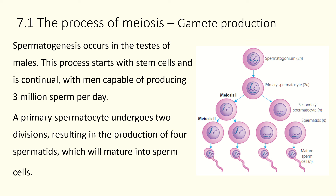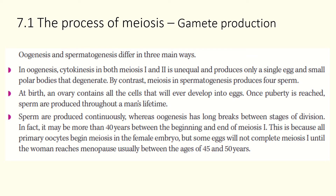The primary spermatocyte undergoes two divisions — meiosis one and meiosis two — and the result is four spermatids, which all mature into sperm cells in the epididymis. So oogenesis takes one diploid oogonium and produces one haploid ovum, whereas spermatogenesis takes one diploid spermatogonium and produces four mature sperm.